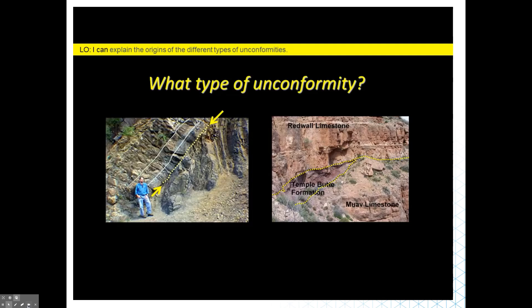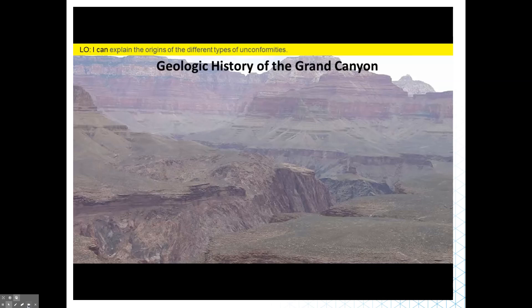In an example, a non-conformity places a sandstone formation on top of much older igneous rocks. To practice: in the left image, sedimentary layers have different orientations above and below the unconformity — the layers to the right are more steeply inclined, making this an angular unconformity. The other photograph shows a pair of disconformities in the Grand Canyon, where the Redwall Limestone rests unconformably on both the Temple Butte Formation and the Muav Limestone — the disconformity represents a gap of over 160 million years.